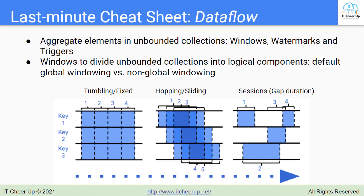In our example, it will have a window duration of 60 seconds and a period of 30 seconds. The last one is a session window. It contains elements within a gap duration between elements. The gap duration is an interval between new data in a data stream. If data arrives after the gap duration, it is assigned to a new window. For example, a session window can be used for a game session or user shopping session.